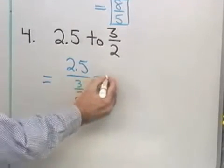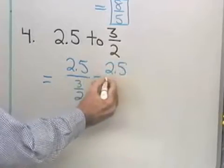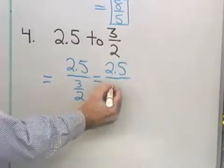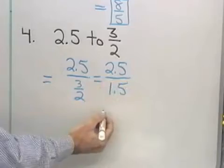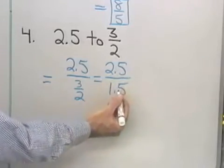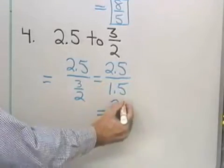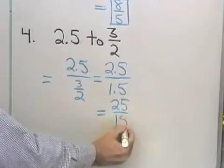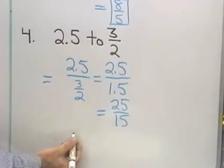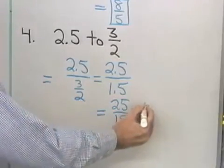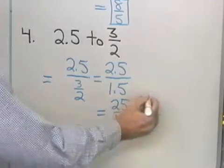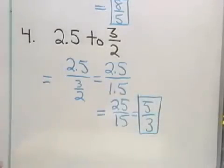I can multiply numerator and denominator by 10, which gives me 25 over 15. Then I'll divide the numerator and denominator by 5, and I end up with 5 thirds as that fraction in lowest terms.